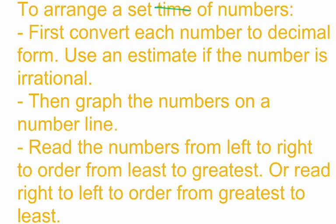Now, if it's an irrational number, you're just going to use an estimate to help us convert it to decimal form. Next, after you have your numbers as a decimal, graph the numbers on a number line. And then finally, read the numbers from left to right to order from least to greatest, or read the numbers from right to left in order to order them from greatest to least.